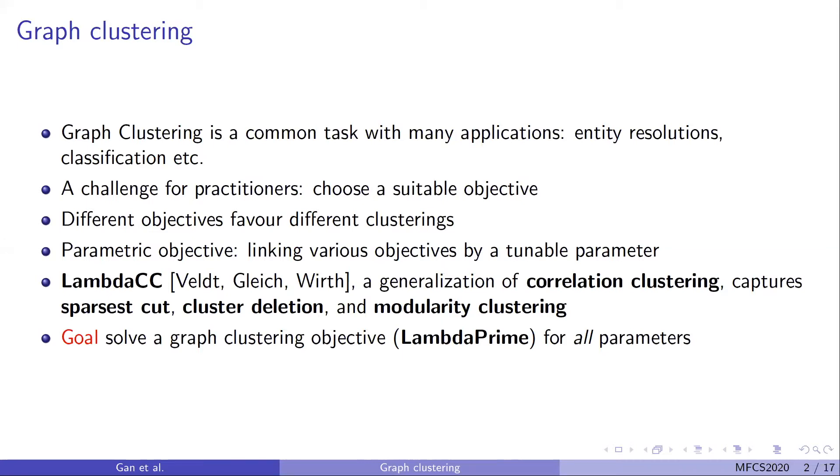One example of a parametric clustering objective is LambdaCC, first proposed by Welt, Gleach, and Wirth. It is a generalization of correlation clustering and captures a series of other clustering problems. For lambda values in a certain range, solving LambdaCC is equivalent to solving one of those clustering objectives. The goal here is to solve a graph clustering objective, LambdaPrime to be specific, for all parameters. LambdaPrime is a variation of LambdaCC because it's easier to show results on this objective, and it's only a constant factor larger than LambdaCC.